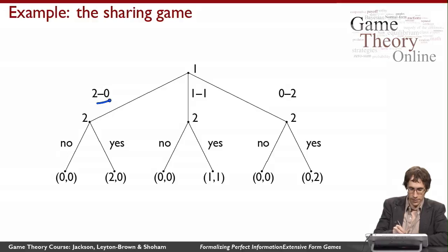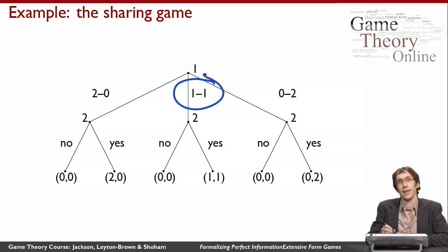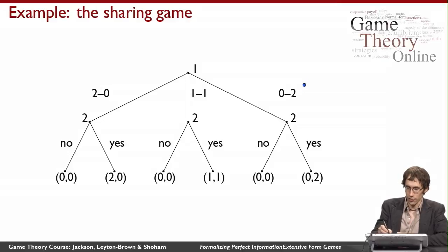He has three actions he can take in the first choice node. His first action is labeled 2-0, meaning he keeps $2 and gives nothing to his sister. The second action is labeled 1-1, meaning he offers to split the money 50-50. The last action is labeled 0-2, meaning he proposes to give all of the money to his sister.